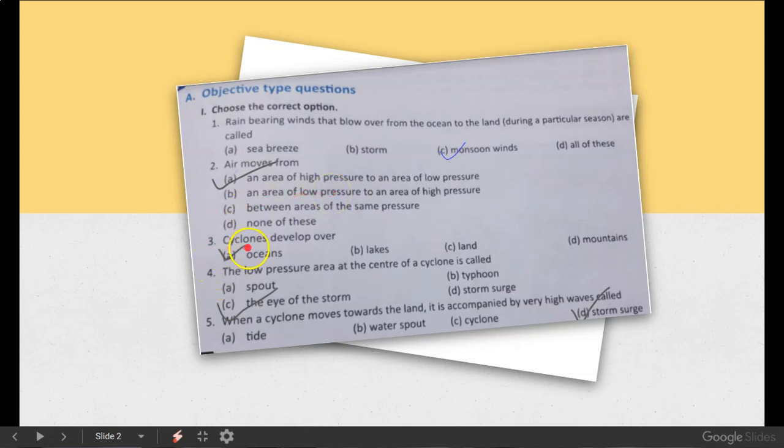So question number 3. Cyclones develop over oceans, lakes, land, mountains. There will not be any question because cyclones develop in the water. The land is very small. Oceans. Oceans is the correct option. The low pressure area at the center of the cyclone is called the eye of the storm.